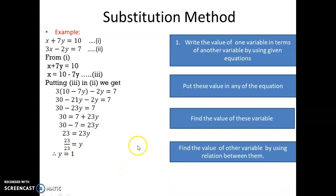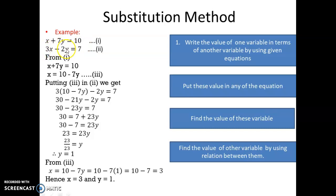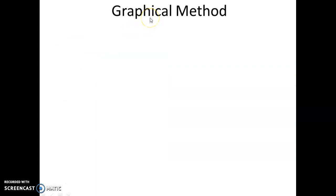Now I need to find the value of the other variable. Using equation 3, x equals 10 minus 7y, I put y equals 1, so x equals 10 minus 7 times 1, which is 10 minus 7, equals 3. So x equals 3 and y equals 1. We can verify: putting x equals 3 and y equals 1 into equation 1 gives 3 plus 7 times 1 equals 10 ✓, and into equation 2 gives 3 times 3 minus 2 times 1 equals 9 minus 2 equals 7 ✓. Answer is correct.